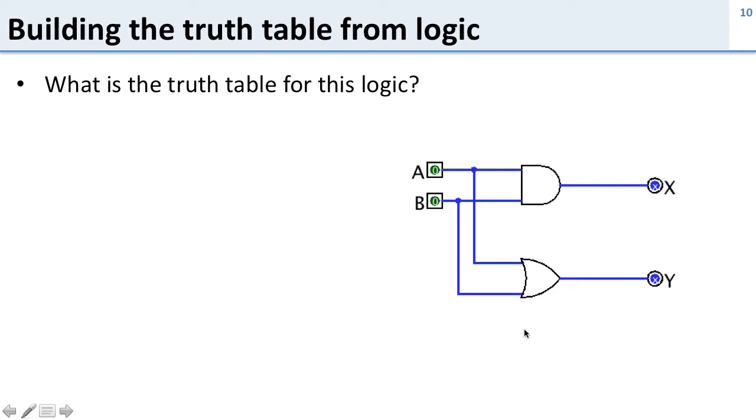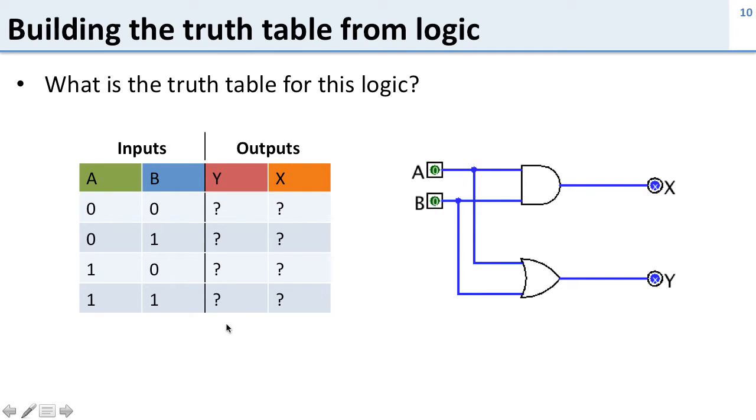We've got an AND gate and an OR gate on our logic circuit. Here's what our truth table is going to look like. We have our two inputs and all possible combinations of our two inputs, and for each combination we're going to specify our outputs Y and X.